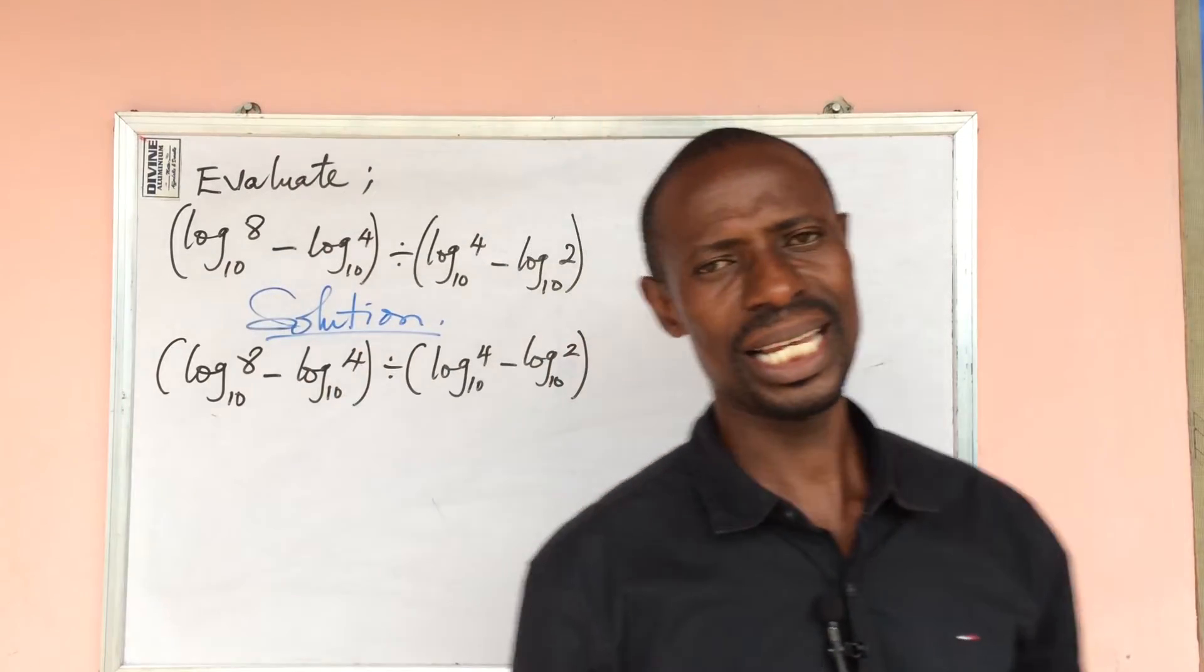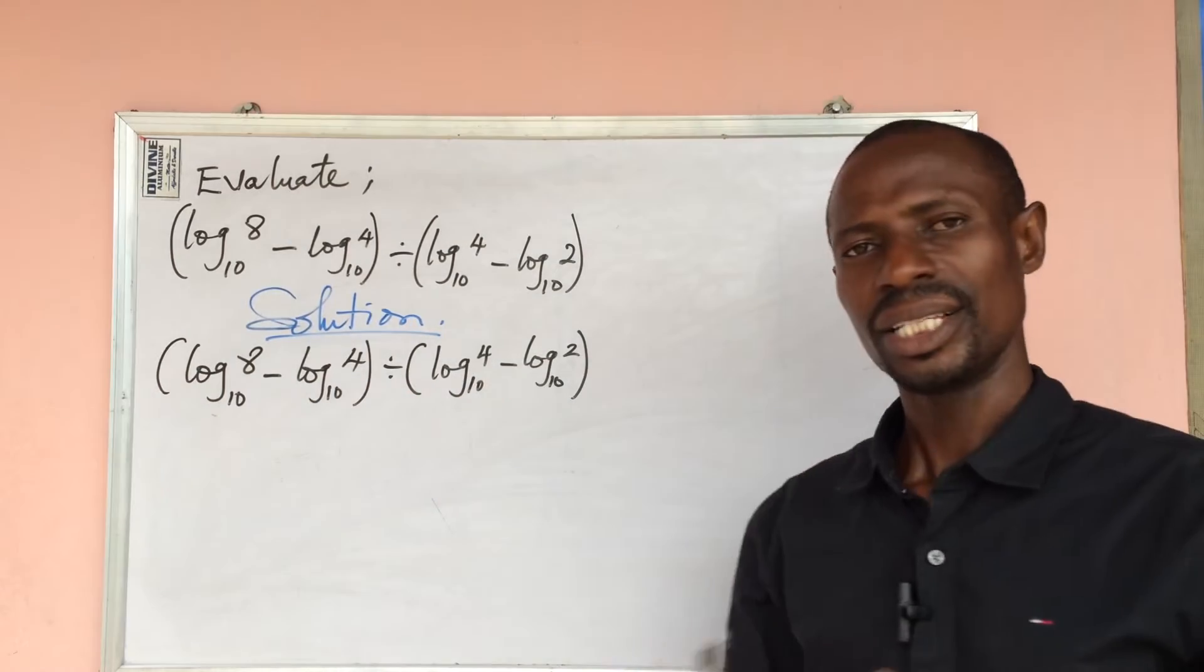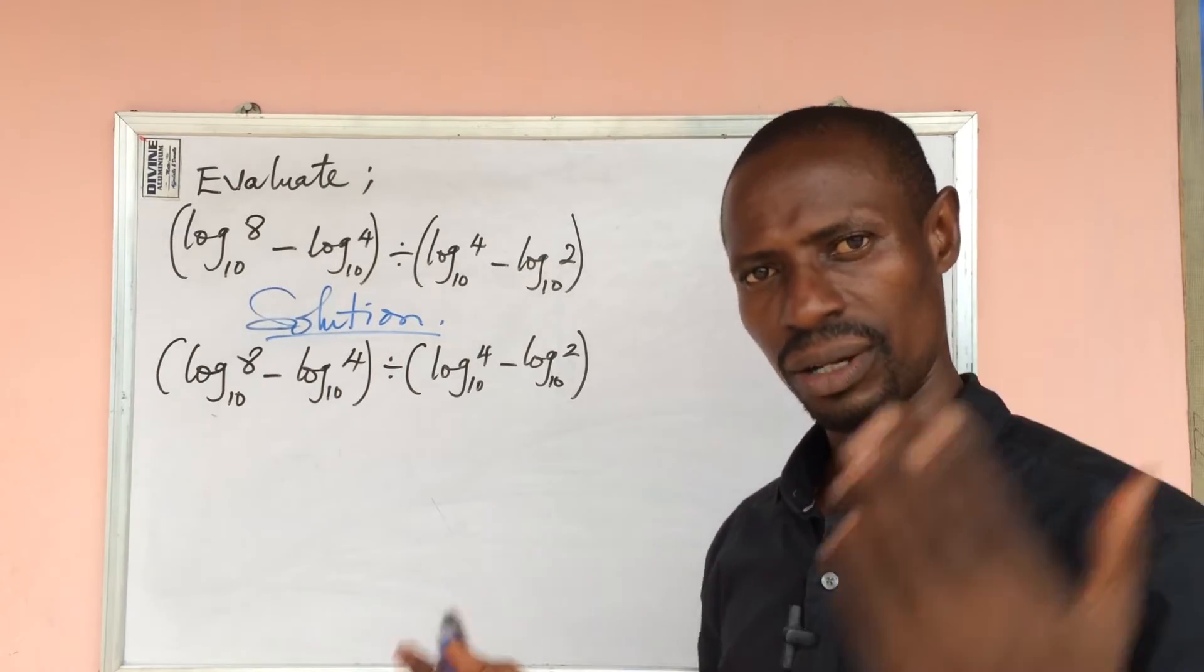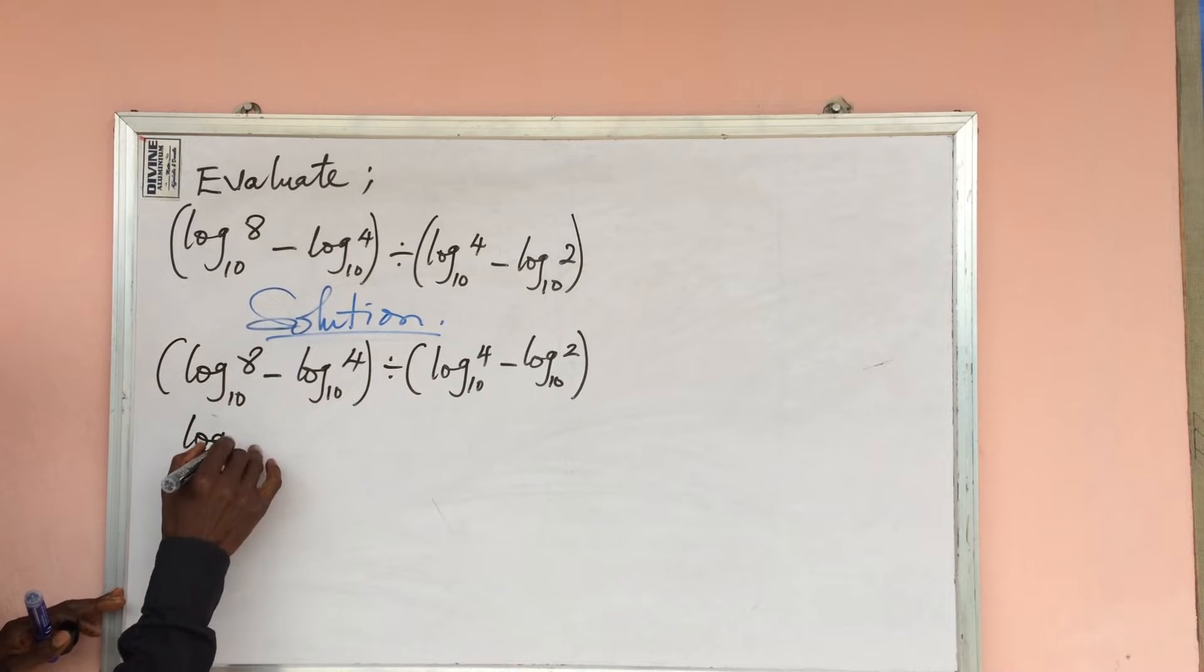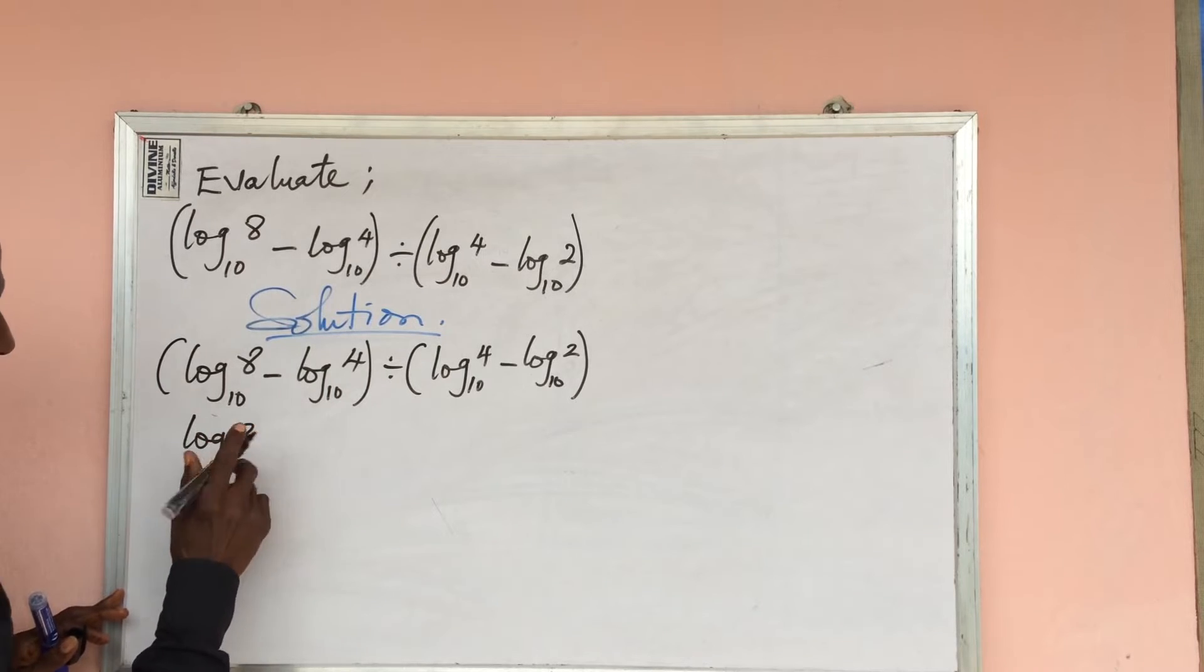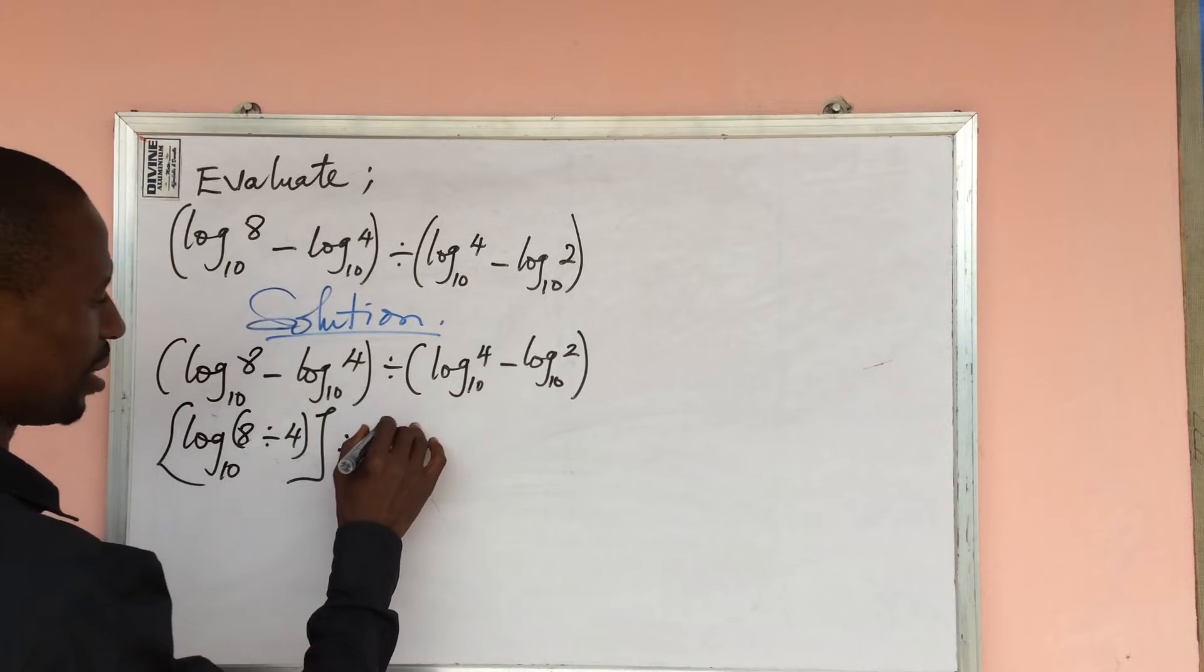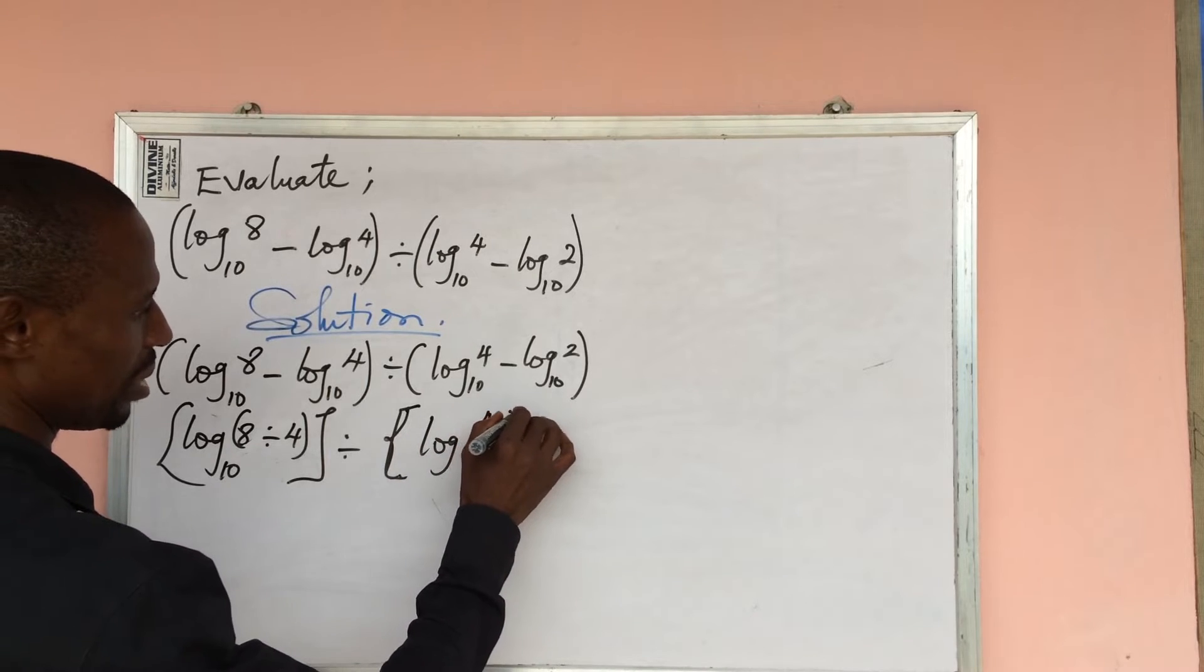There is a law of logarithms that says that when you have a minus in this form, then divide the logs, as long as they are having the same base number. So according to that law of division of logarithms, this expression could be written as log 8 divided by 4, close bracket, base 10, in square brackets, divided by log 4 divided by 2, in bracket, base 10.